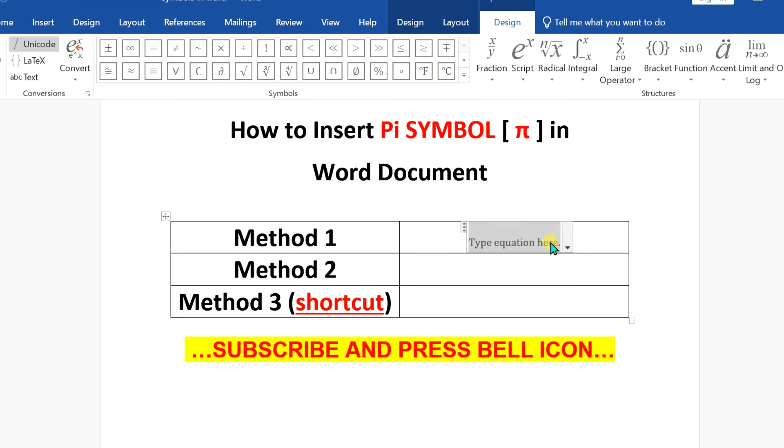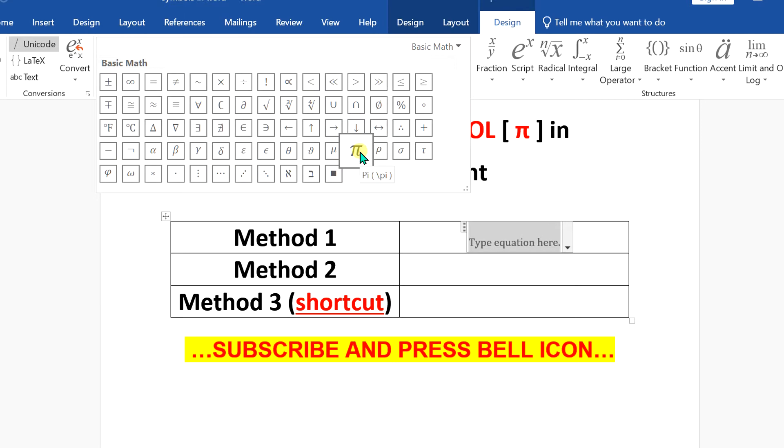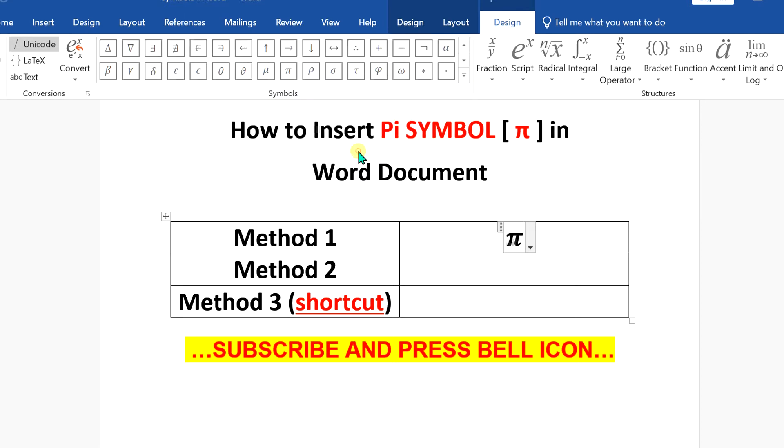An equation editor will be inserted. Now, under the symbol dashboard here, you will see pi symbol. You can click on the symbol to insert it or you can just insert backslash and type pi and press spacebar on your keyboard to enter the symbol.